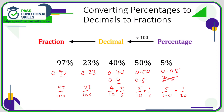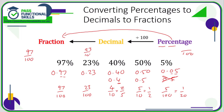To convert a percentage directly to a fraction, remember that 'percent' means out of 100, so a percentage is already a fraction out of 100. So 97% is 97/100, 23% is 23/100, 40% is 40/100, 50% is 50/100, and 5% is 5/100. Then simplify where possible: 97/100 and 23/100 can't be simplified. 40/100 reduces to 4/10 then to 2/5. 50/100 is 5/10 which is 1/2. And 5/100 is 1/20.